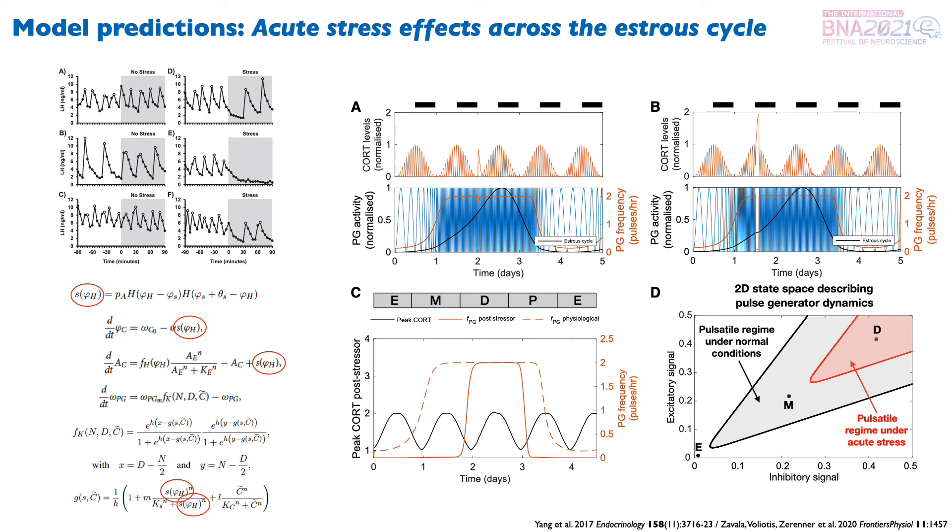We found that if the stressor arrived at the nadir of the circadian cortisol rhythm, the suppression of pulse generator frequency was minimal. Whereas if it arrived at the circadian peak, then the compounded effect of elevated cortisol levels would temporarily shut down the pulse generator. By sweeping the entire estrous cycle with acute stressors, we were able to build response curves for both the cortisol amplitude and the pulse generator frequency following a stressor. Interestingly, we also found that there is a region right between the diestrus and proestrus phase of the cycle where acute stressors seem to cause no change whatsoever on the pulse generator frequency.